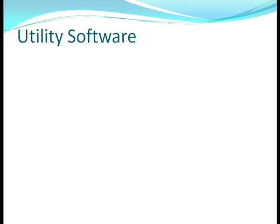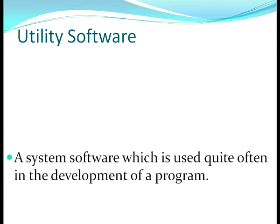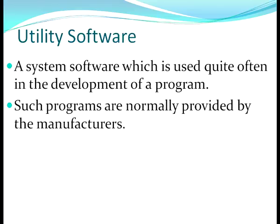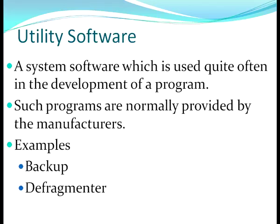The third type of system software is utility software, used quite often in program development. These programs are normally provided by manufacturers, though add-on utilities are also available. They are used for housekeeping functions of a computer. Examples include: backup utility for taking data backups; defragmenter utility for efficient use of storage by compiling unused portions into a single block; and antivirus utility for removing viruses from your computer.